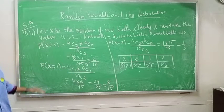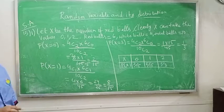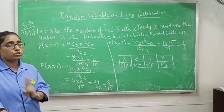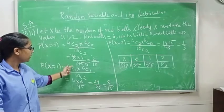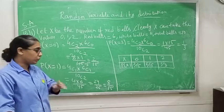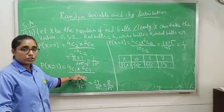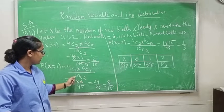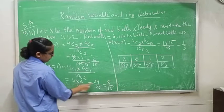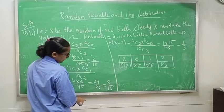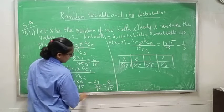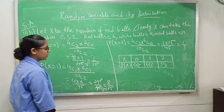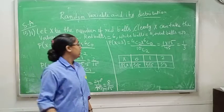P(X=1): we take 1 red and 1 white ball. So 6C1 into 4C1 divided by 10C2. 4C1 is 4, 6C1 is 6, and 10C2 is 45. Multiplying gives 24/45. After cancelling, P(X=1) = 8/15.